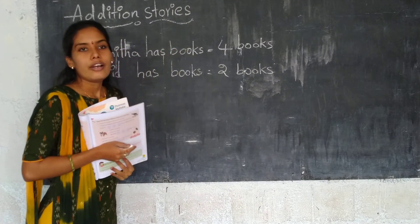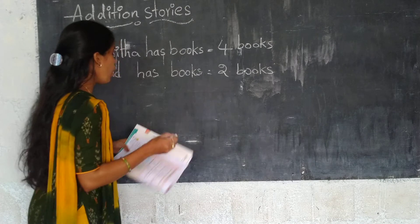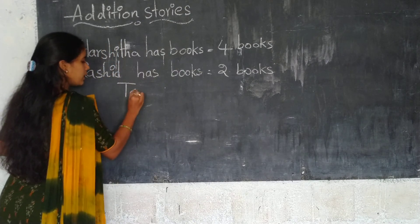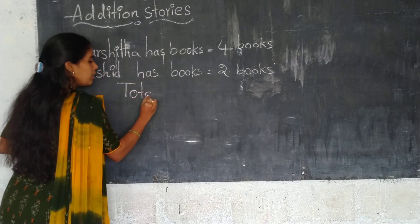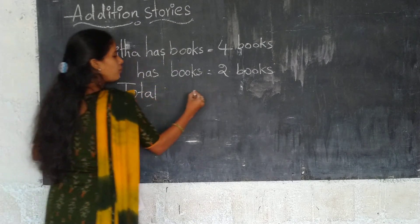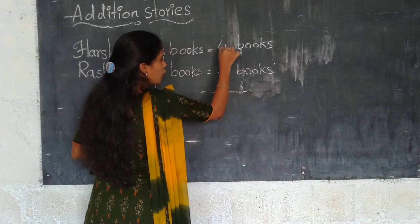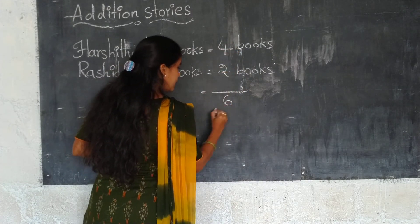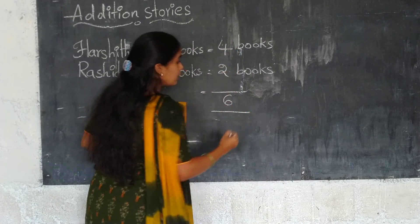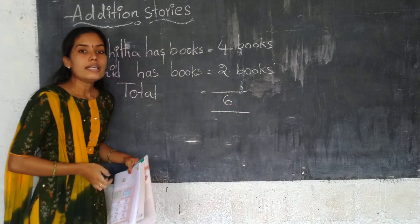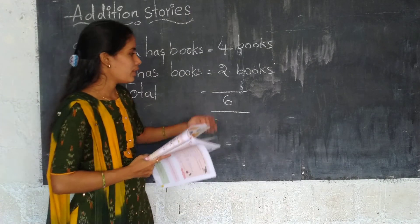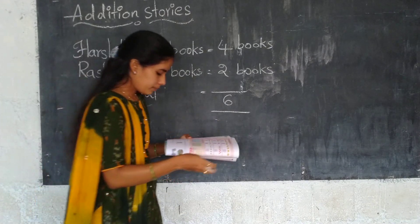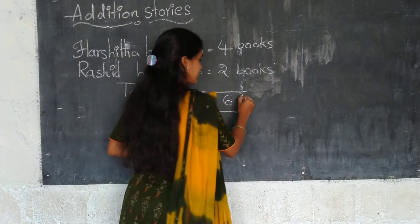It is written in vertical order. How many total books are there? Four plus two equals six. Total six books.